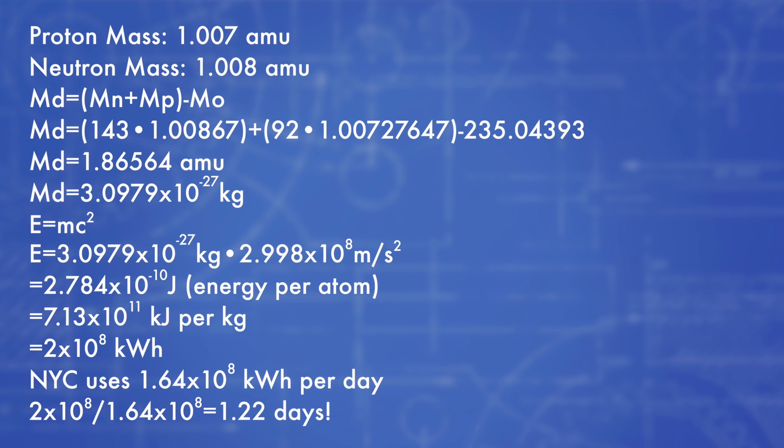Using Einstein's famous E equals mc squared equation, we can actually calculate that if the energy in one kilogram of uranium was perfectly converted to electricity — which of course it's not — it could power the whole city of New York for over 24 hours. So today we learned that the tiny amounts of energy that hold every atom together can be used to both power and level cities. Thanks for watching.